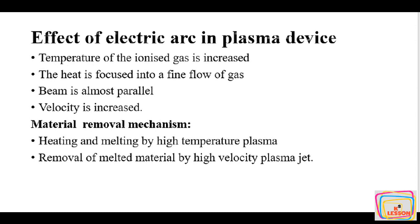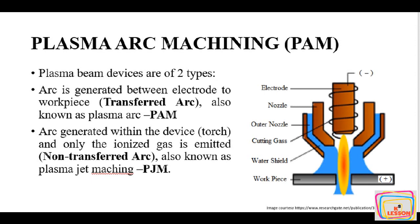The metal removal mechanism involved in this process is heating and melting by high-temperature plasma. When high-temperature plasma impinges on the workpiece, the workpiece gets heated and melted, and the metal is moved by the high-velocity plasma jet. Through these two steps, we machine the workpiece. Plasma arc machining is further divided into two parts: the transferred arc and the non-transferred arc.